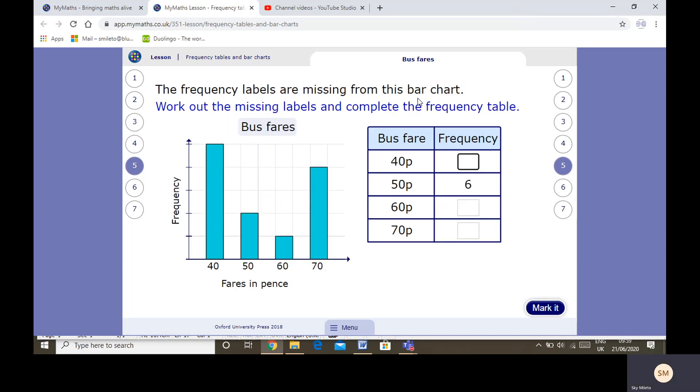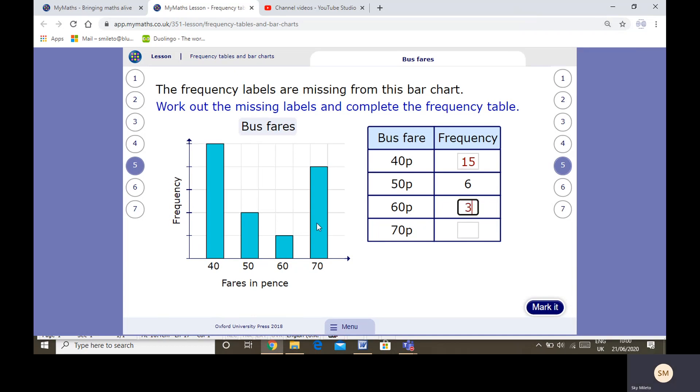Frequency labels are missing from this bar chart. We have to work out by using the table. We know that 50p we have 6. This frequency would be 6. We know that this one half of it would be 3. So it must be going 3, 6, 9, 12. It's going up in 3s. If you didn't understand that, I used the knowledge that this was 6 to be able to work out that half of 6 would be 3. So it must be going up in 3s. I hope you understand that. So 40p would be 15, 60p would be just 3, and 70p would be 12. Let's see if I've got it right. Well done if you understood that.